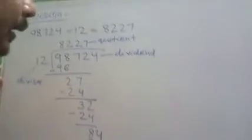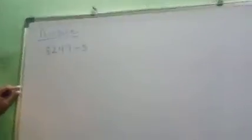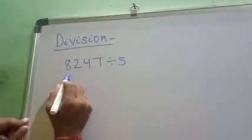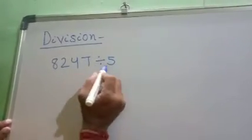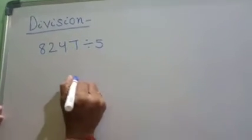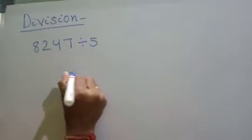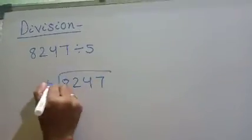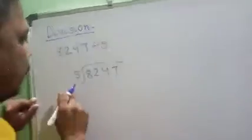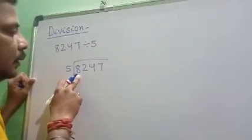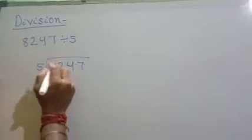Let's take another example. I have taken 8,247 divided by 5. Let's divide 8,247 by 5. Since 5 is of 1 digit, we have to divide 8 with 5.